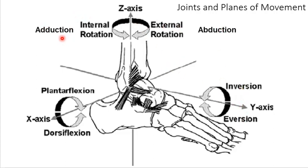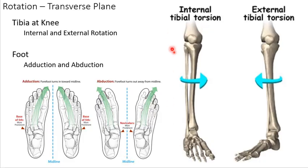The biggest takeaway: don't confuse adduction and abduction with frontal plane motion. Adduction and abduction refer to transverse plane motion, and that would be a good testable concept. If you're sitting in your chair with your knee bent at 90 degrees and you turn your feet in toward each other, you have done internal tibia rotation and simultaneously foot adduction. If you turn your feet out, you have done external tibia rotation and foot abduction. That's how internal rotation converts to adduction and external rotation converts to abduction of the foot.